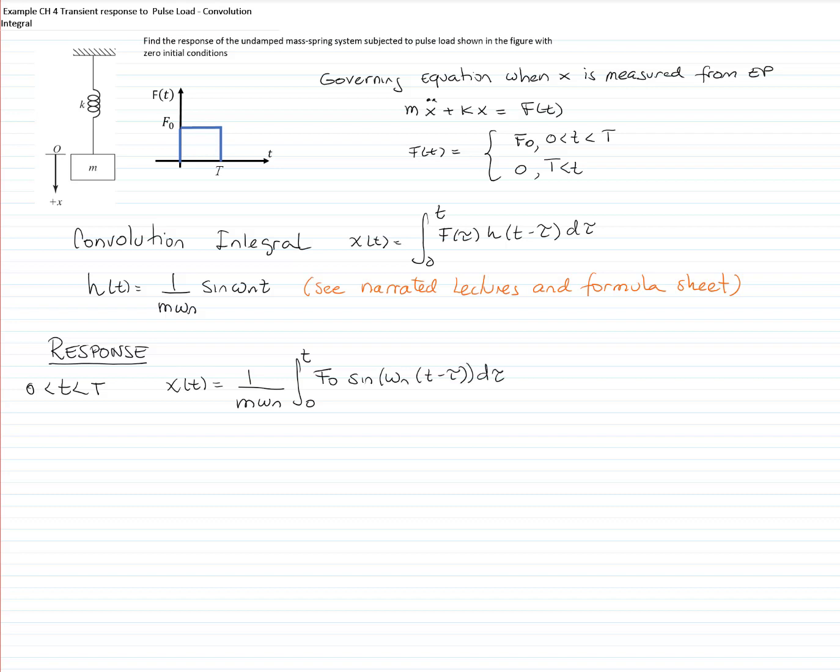Now, this integral, F sub 0 can be taken out of the integral, and the integral of sine is negative cosine, and is divided by the internal derivative, which is negative omega n, because tau is negative.